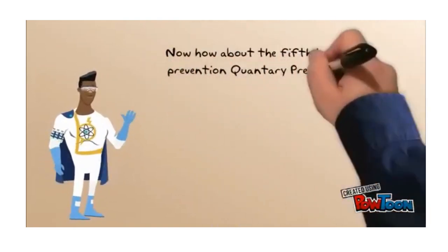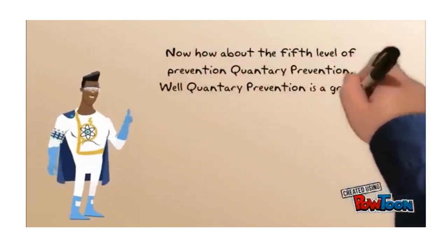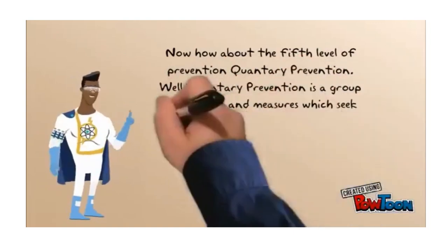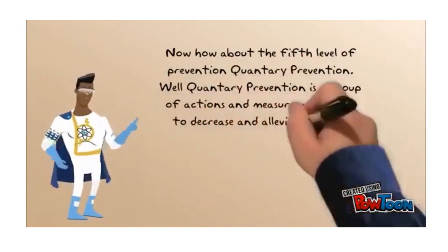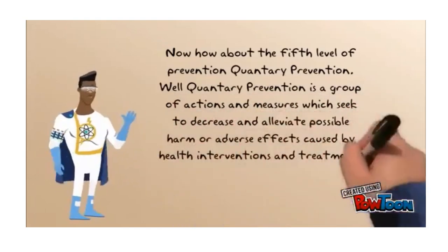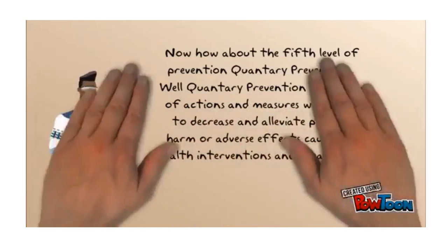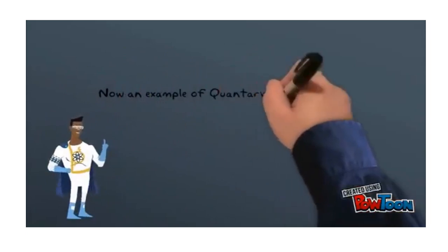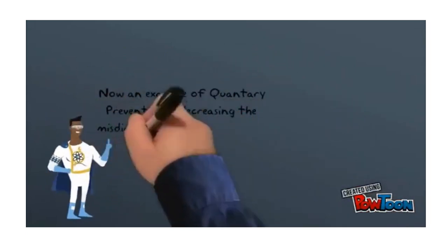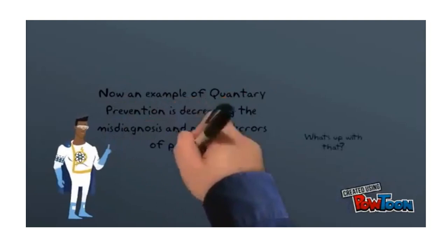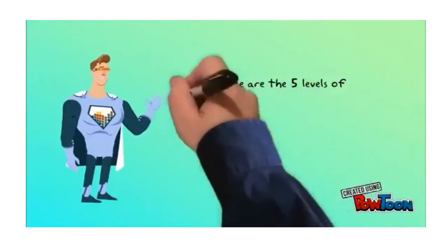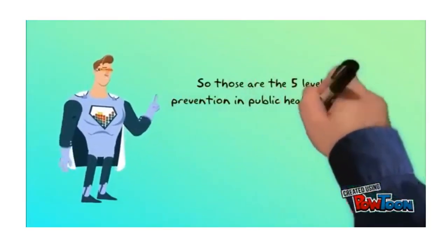The fifth level of prevention is quaternary prevention. Quaternary prevention is a group of actions and measures which seek to decrease and alleviate possible harm or adverse effects caused by health interventions and treatments. An example of quaternary prevention is decreasing the misdiagnosis and medical errors of patients. Those are the five levels of prevention in public health.